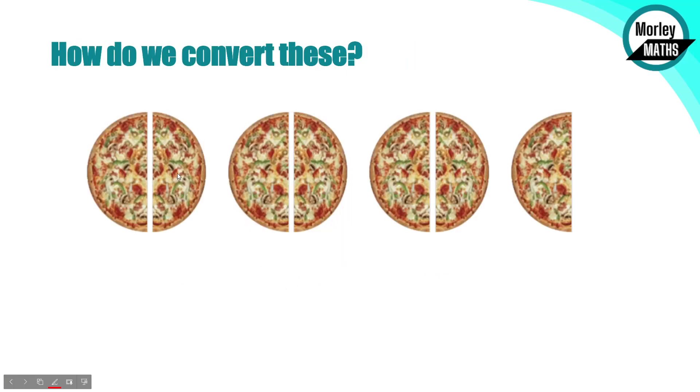For example, we can see here clearly we've got three and a half pizzas. As a top heavy fraction or improper fraction we can see we've got one, two, three, four, five, six, seven halves of pizza. We're not likely to call it seven halves of pizza. We'll always generally just say we've got three and a half pizzas left. But it's quite important to know how we can convert one to the other.